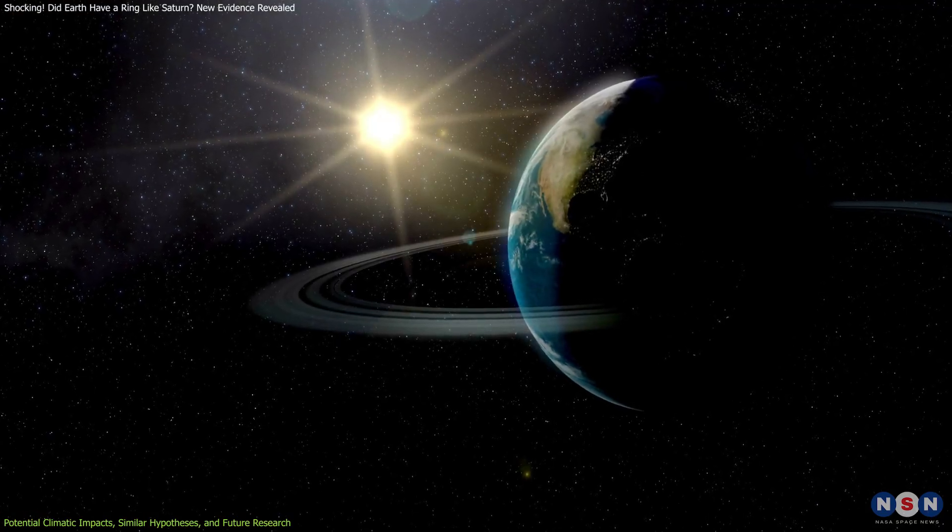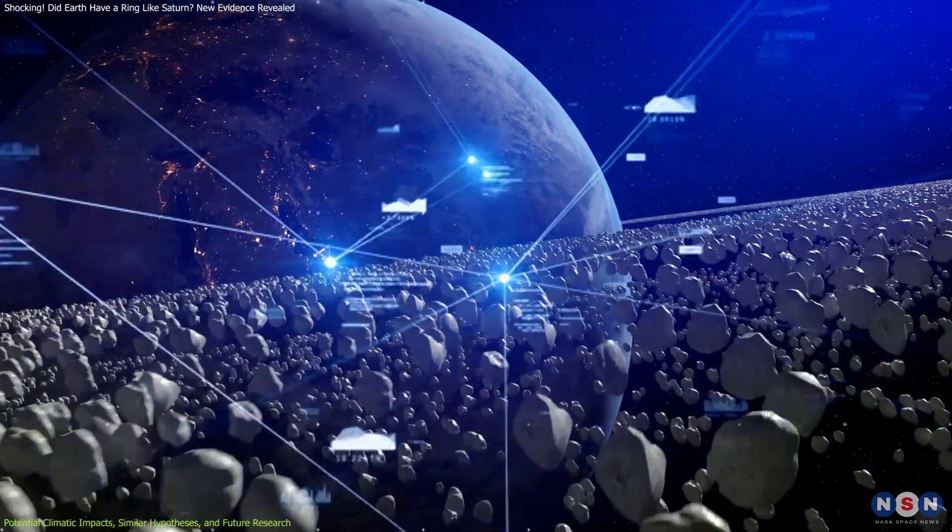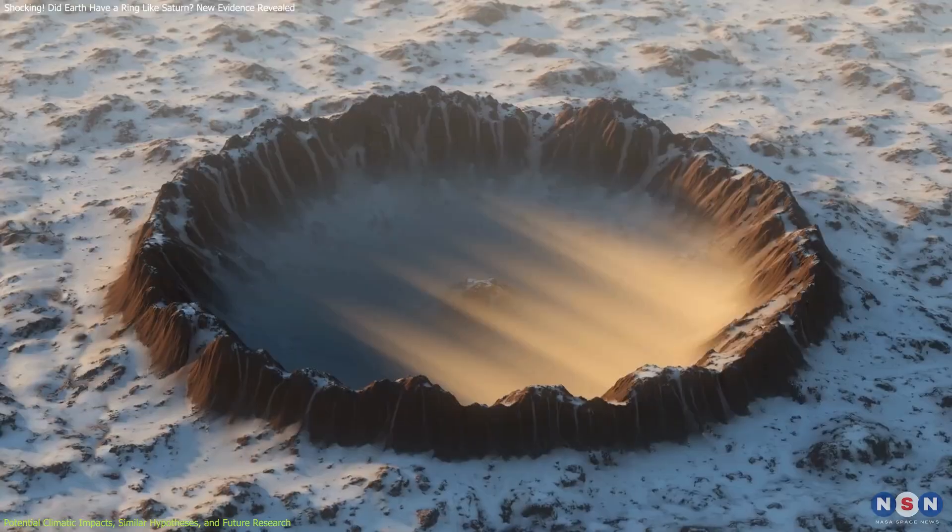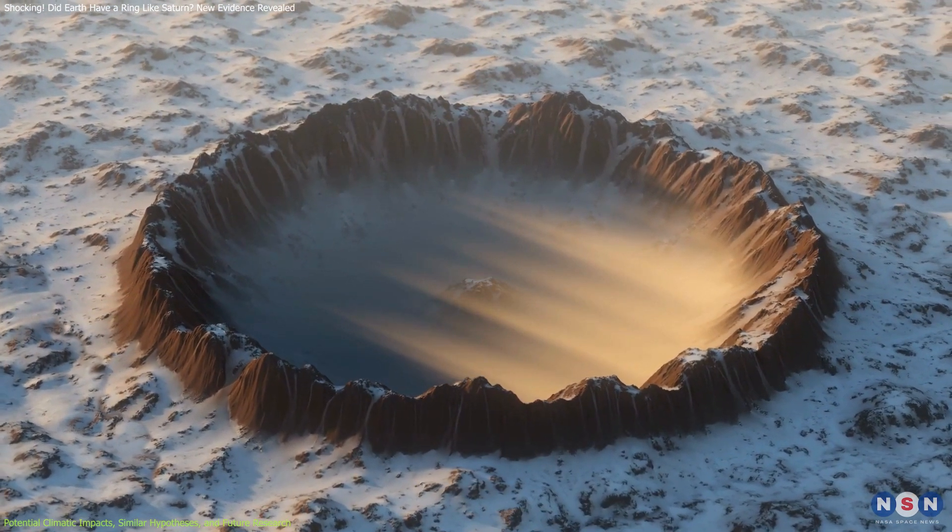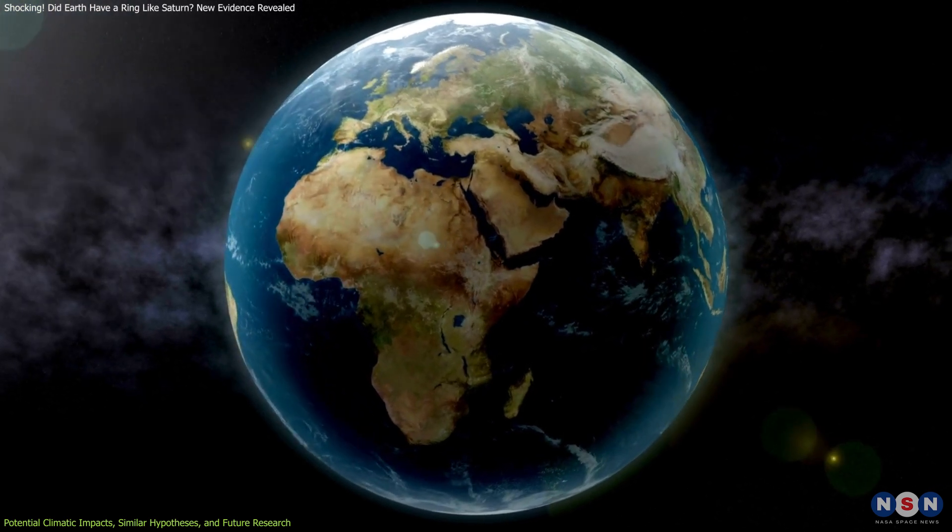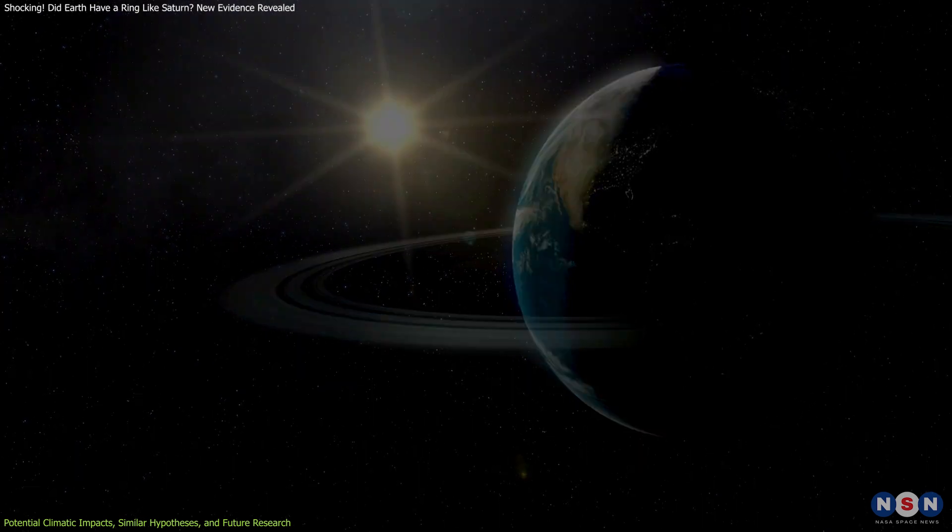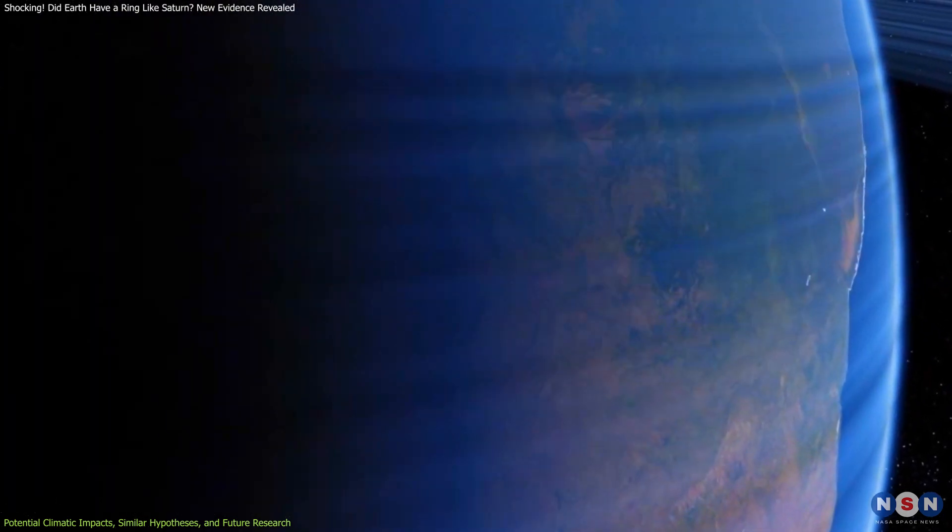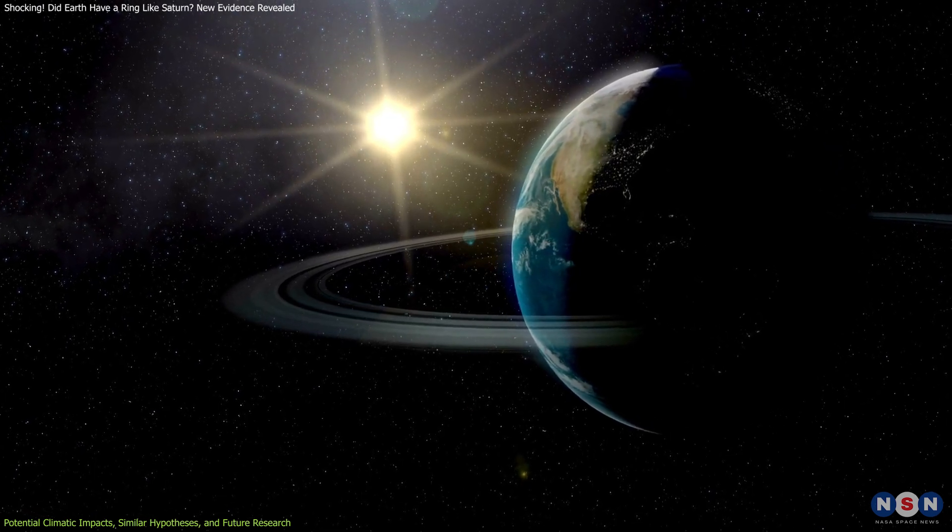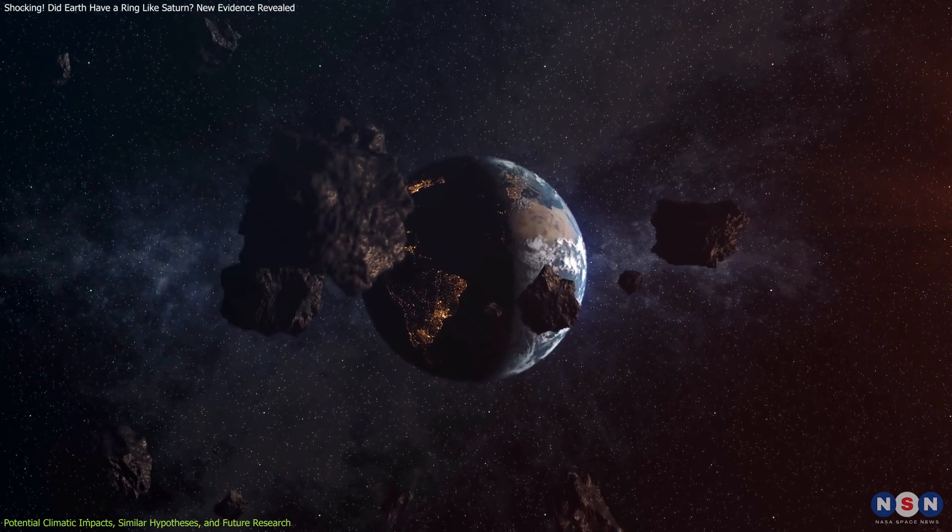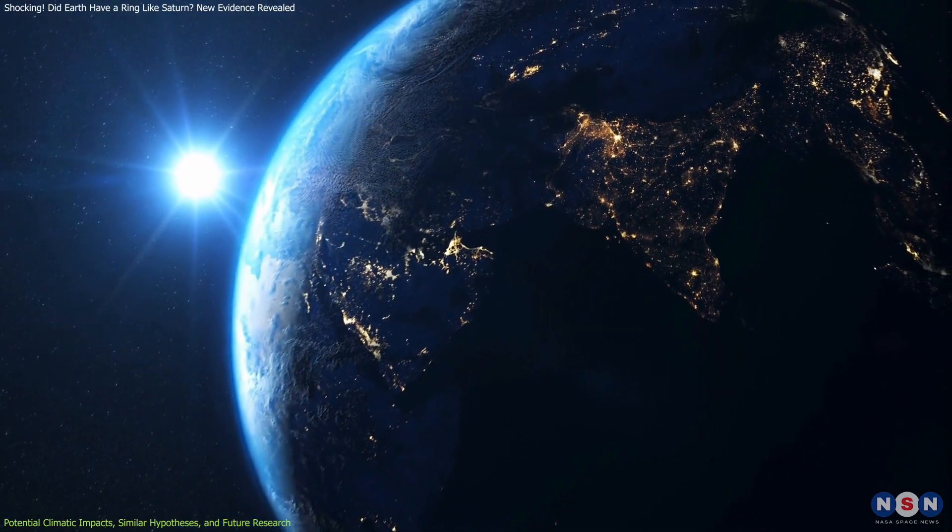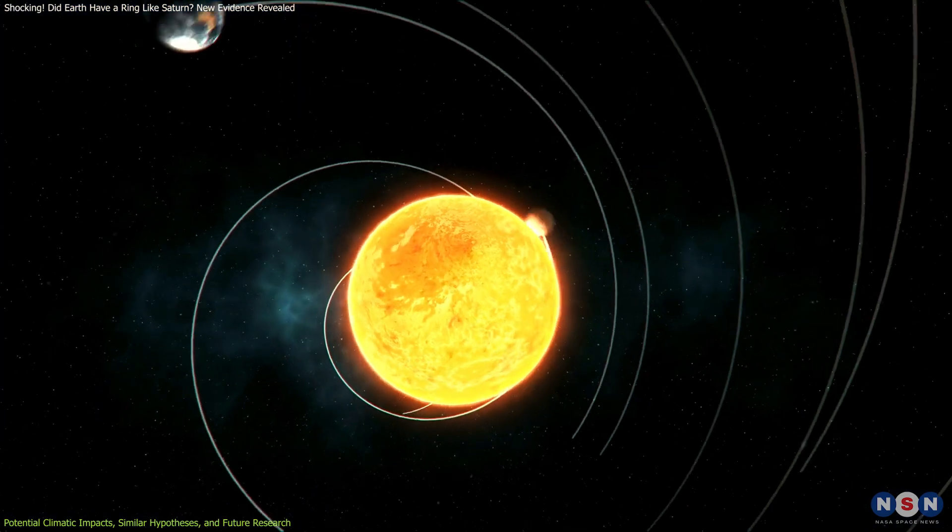Future research is crucial to verifying the existence of Earth's ancient ring. Scientists could use advanced techniques like isotopic analysis to detect specific grains from asteroids that might have formed the ring. These grains, if found in the craters or nearby geological formations, could provide a smoking gun for the existence of the ring. Additionally, more sophisticated climate models could be developed to simulate how such a ring might have affected Earth's climate, helping scientists to better understand the relationship between cosmic events and climate change. The hypothesis of Earth having a ring opens up many questions. How often do such events occur? What are the chances of similar events happening in the future? And what would be the implications for life on Earth if they did? These questions make this topic not only scientifically intriguing but also relevant for understanding the broader dynamics of our solar system.